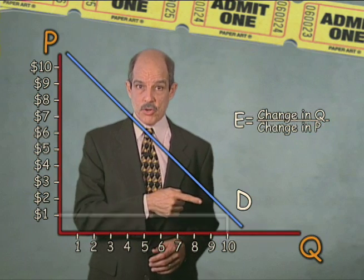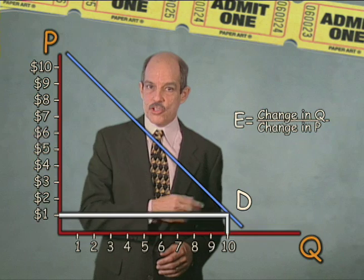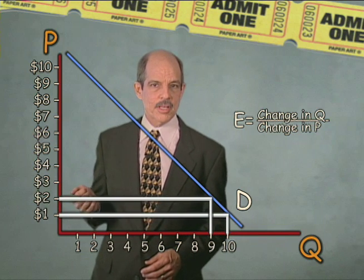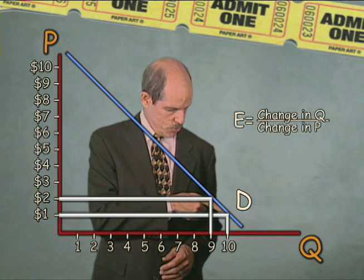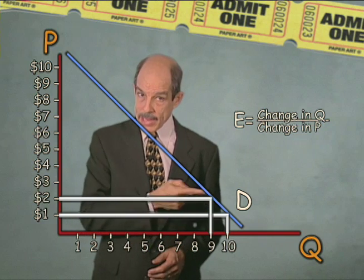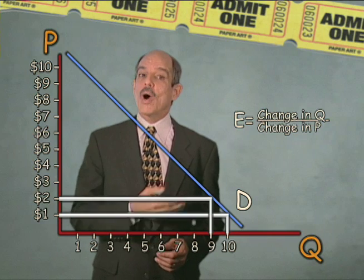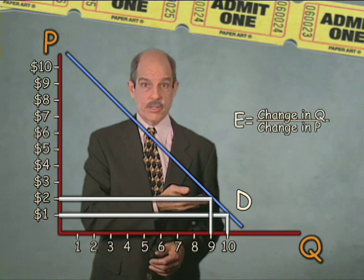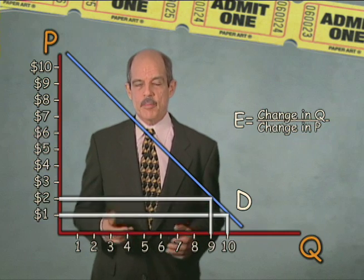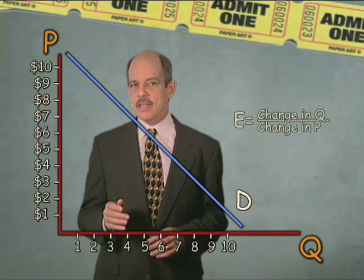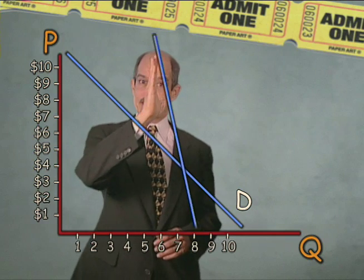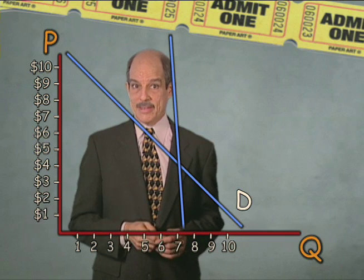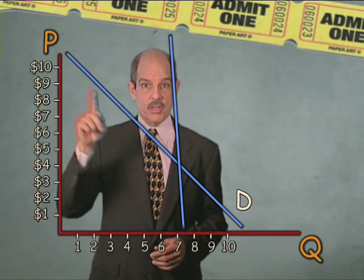Meanwhile, down here, the opposite occurs. We're in the price range that changes a lot in percentages. It doubles from one dollar to two dollars. Yet, the quantity demanded only drops from ten to nine. So here, in percentage terms, quantity demanded changes less than price and is price inelastic, just because of where we are on the line. But all else equal, a linear demand schedule becomes more inelastic the more vertical its slope. Quantity demanded is less responsive here than it was here.